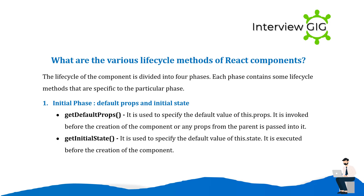What are the various lifecycle methods of React components? The lifecycle of the component is divided into four phases, and each phase contains lifecycle methods specific to that phase. Phase 1 — Initial phase: getDefaultProps is used to specify the default value of this.props; it is invoked before the creation of the component or any props from the parent are passed into it. getDefaultState is used to specify the default value of this.state; it is executed before the creation of the component.